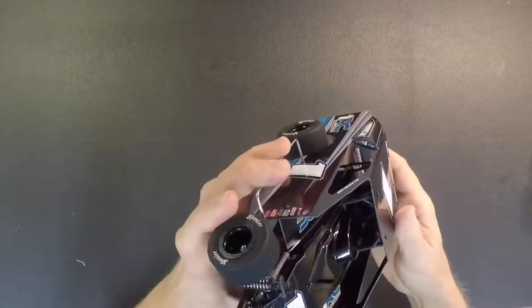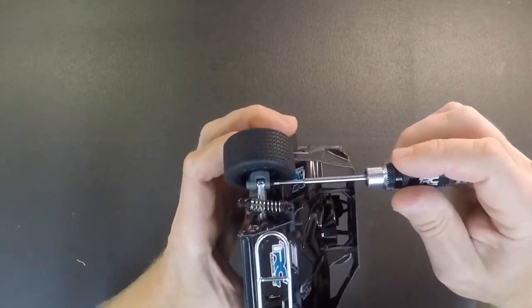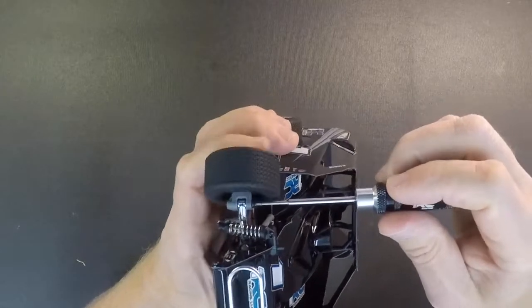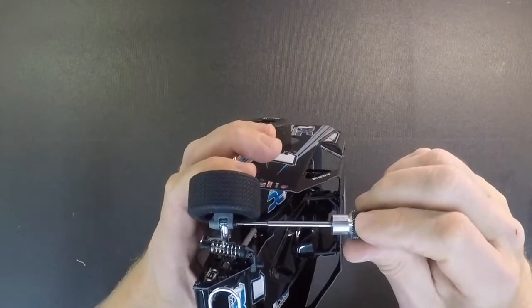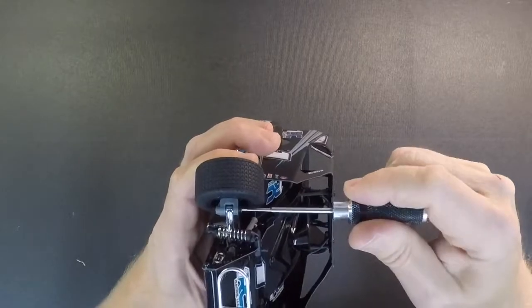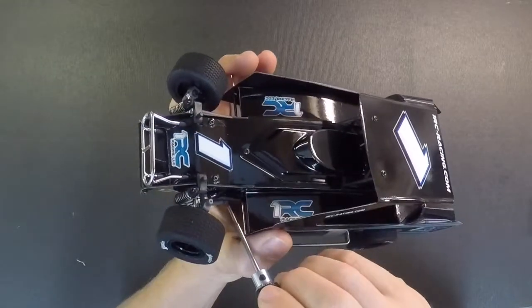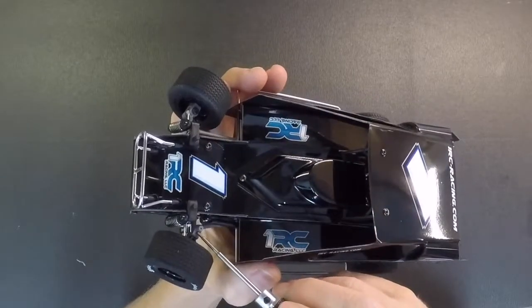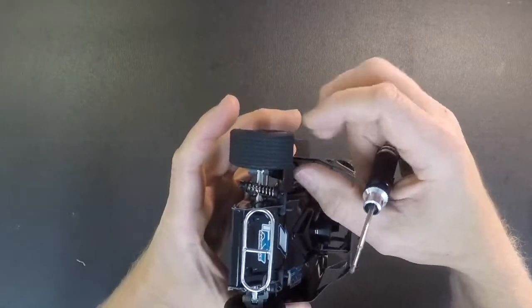Now there is a couple things you can do to help with that. First one is the kingpin screw on the top of the spindles right here. Sometimes the vendor that does these cars for us doesn't get this screw completely tight. So what you can do is turn that screw in until you feel some resistance. But before you start to do that, make sure you disconnect the drag link from the left side steering block over here. It'll make it a lot easier for this process to make sure your steering turns left to right easy.